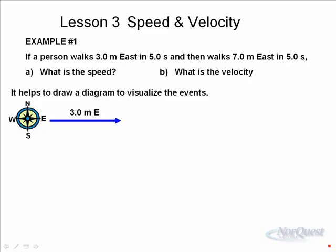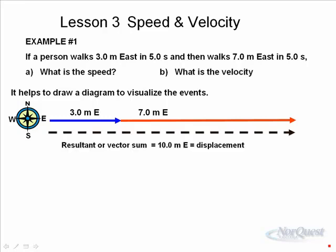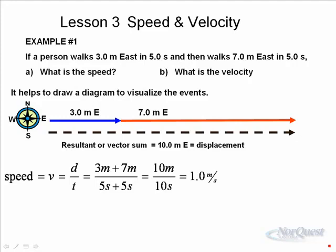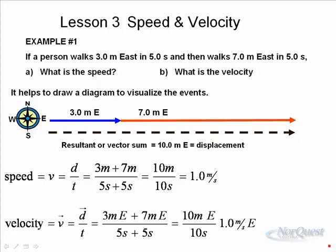Three meters east — draw a short arrow going east, then add a longer arrow of seven meters, also to the east. The resultant of these two vectors is three plus seven, which is ten meters. So the total distance is ten meters. The total displacement is also ten meters, but you must also state the direction — which is east. Speed = d/t = (3 + 7) m / (5 + 5) s = 10/10 = one point zero meters per second. Velocity = three meters east plus seven meters east = ten meters east in ten seconds = one point zero meters per second east.